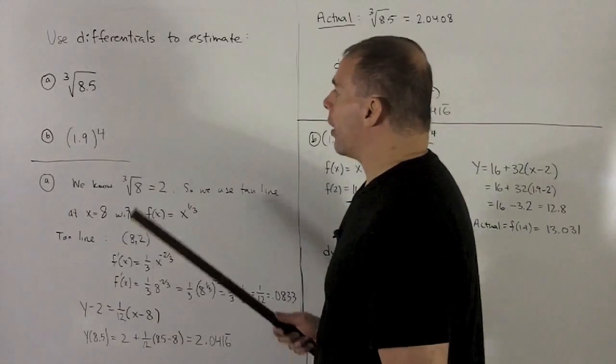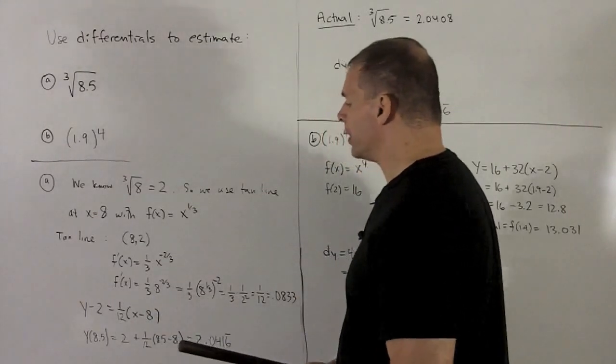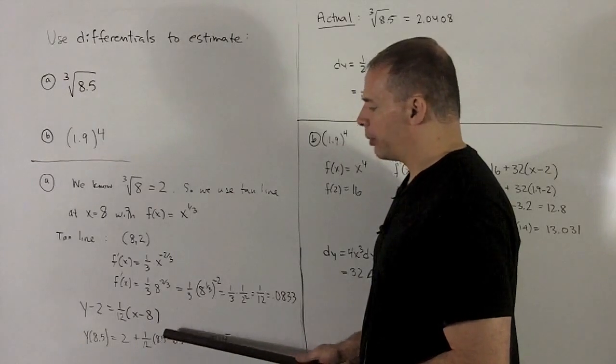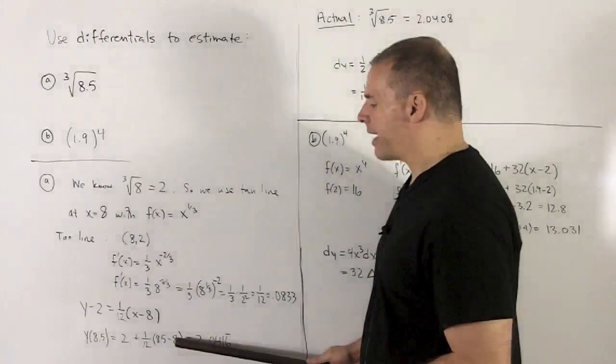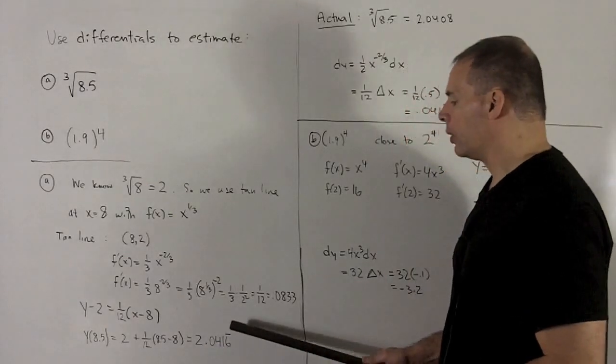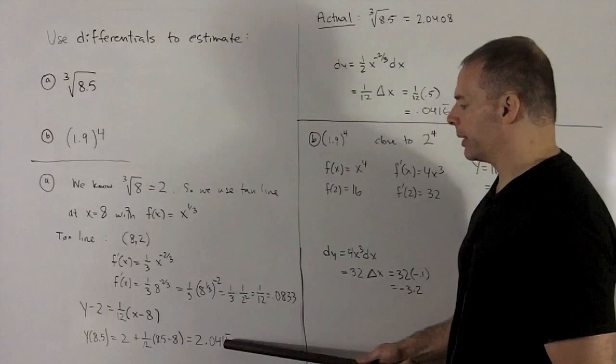All right, now I want to know what this is going to be equal to. We put 8.5 into the tangent line, so we follow our nose: 2 plus one-twelfth of (8.5 minus 8), or a half. So it's 2 plus one-twenty-fourth, and I get 2.0416 repeating. So that's our estimate.